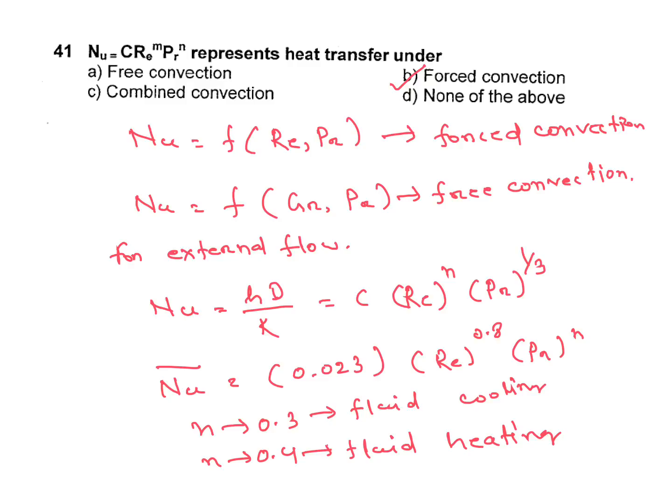So the answer is: forced convection. Nusselt number is a function of Reynolds number and Prandtl number, and Nusselt number equals h·d divided by k. This formula is important.